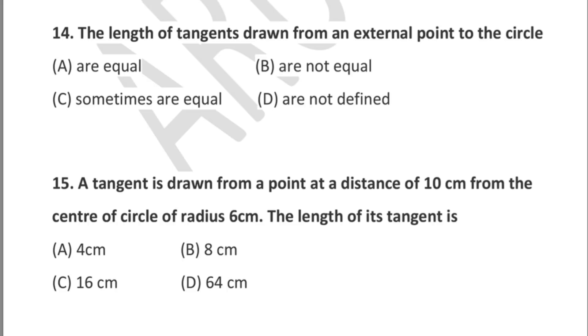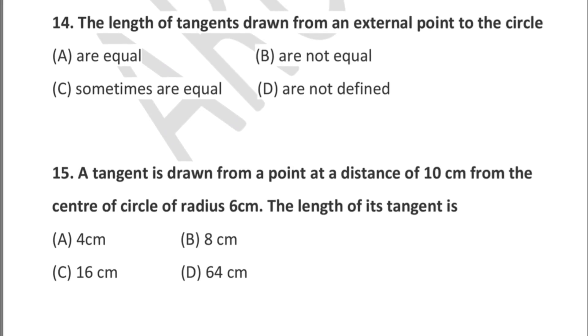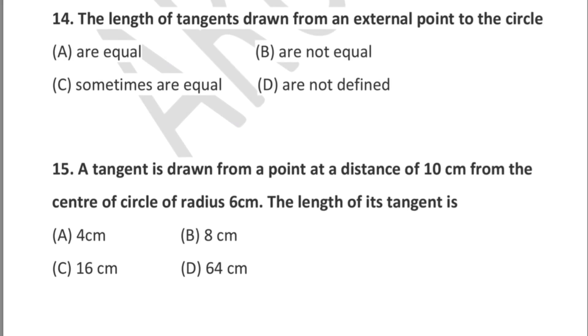Question 14: the lengths of tangents drawn from an external point to a circle are — option A: equal, option B: not equal, option C: sometimes equal, option D: not defined.